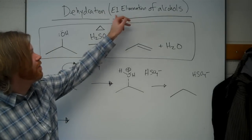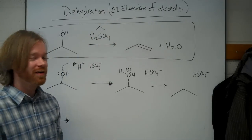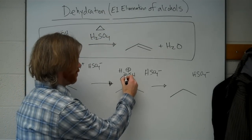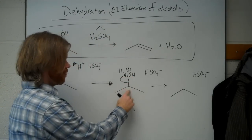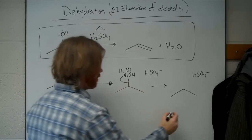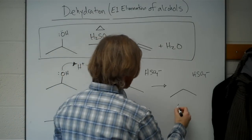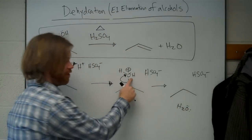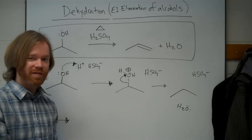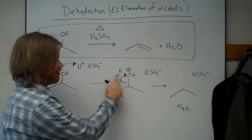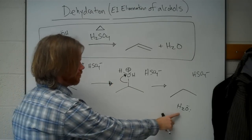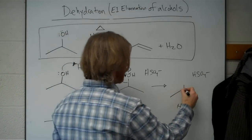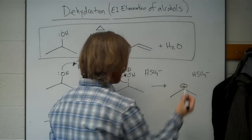If you're doing E1 elimination, the leaving group comes off first. And so the carbon-oxygen bond breaks, which is going to give us water. This here was plus charge, but it gained those electrons, so it's just neutral water. The carbon lost those electrons and becomes our carbocation.